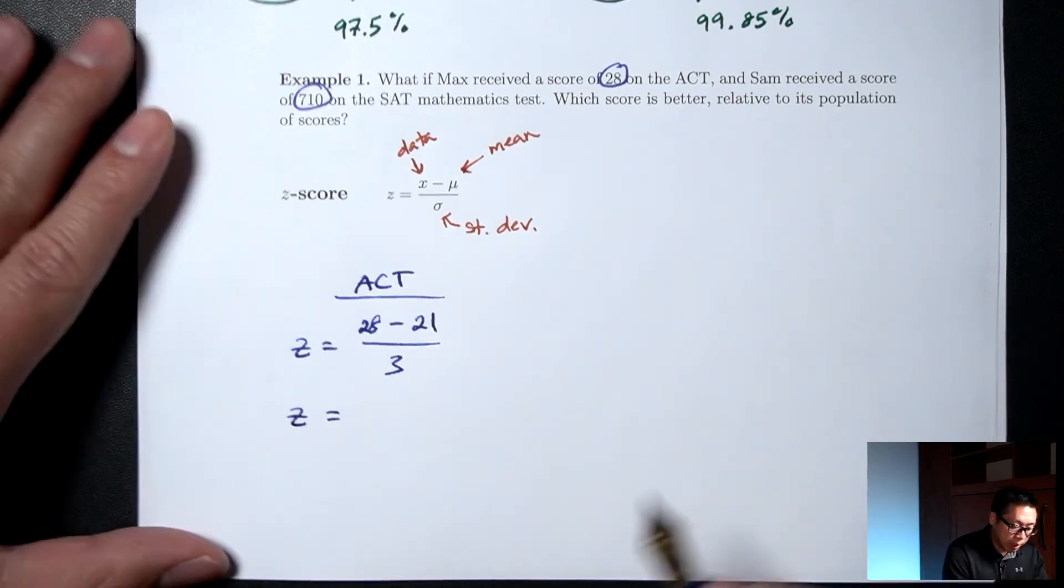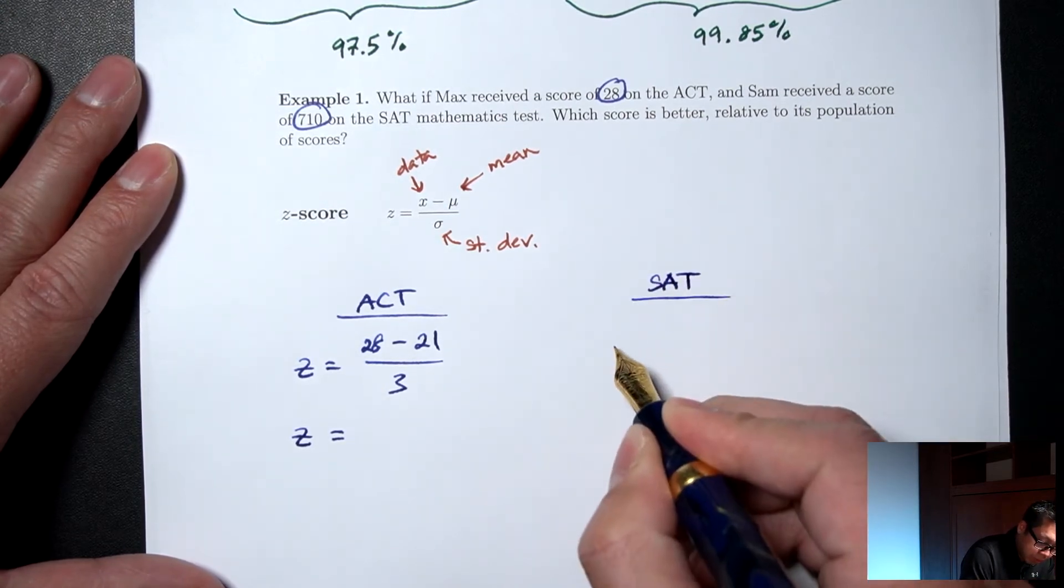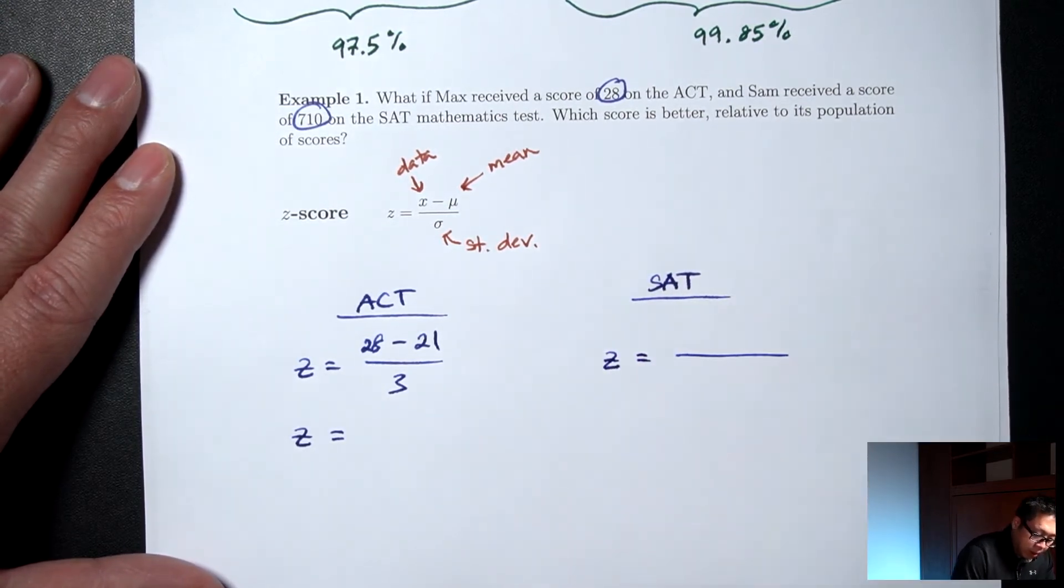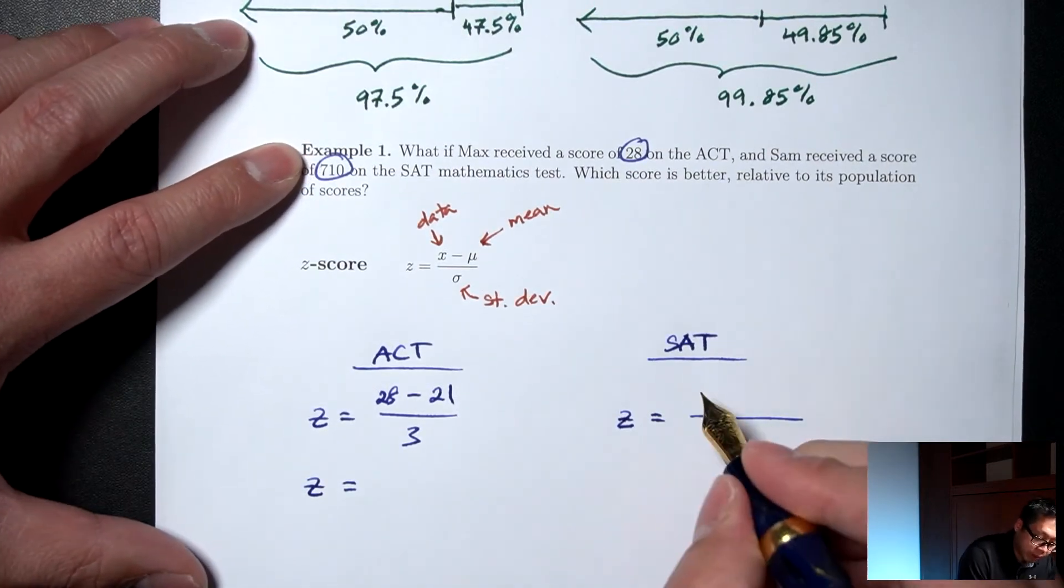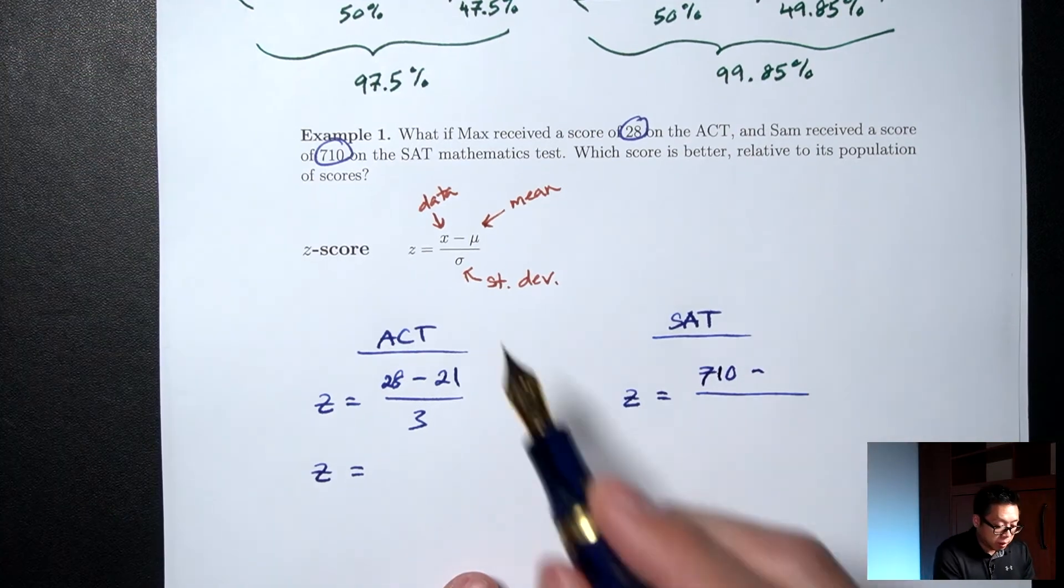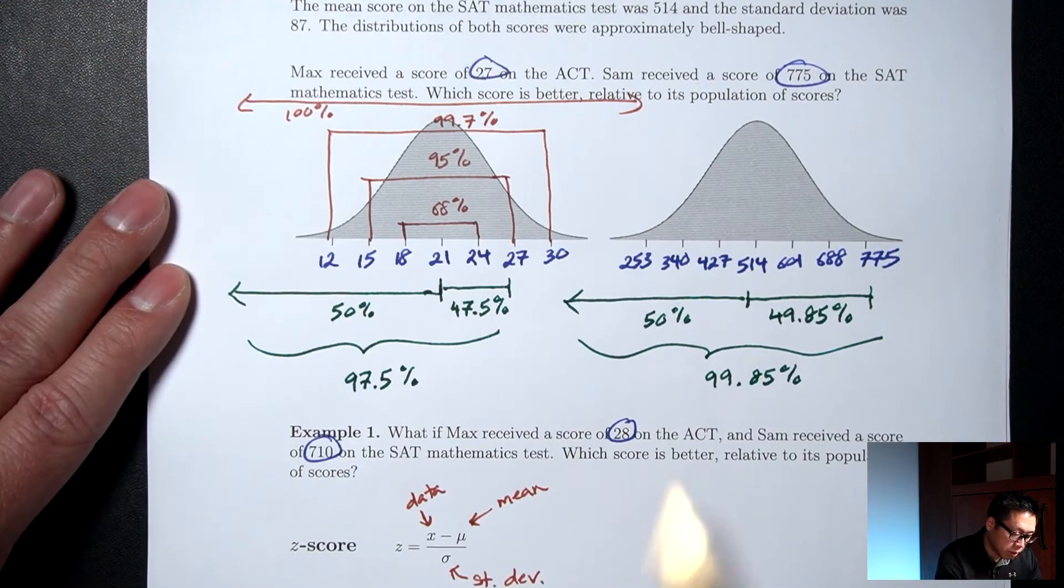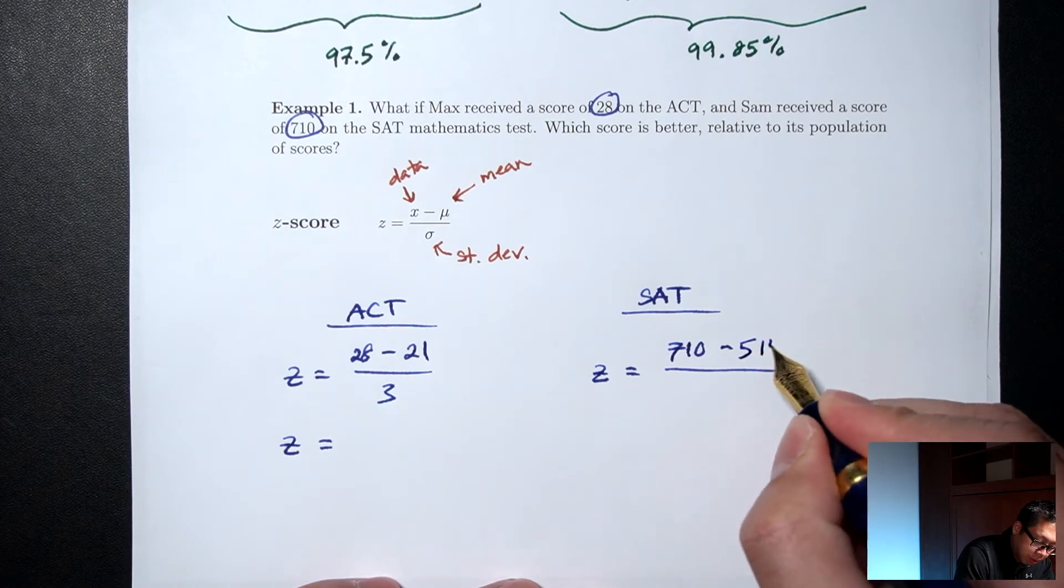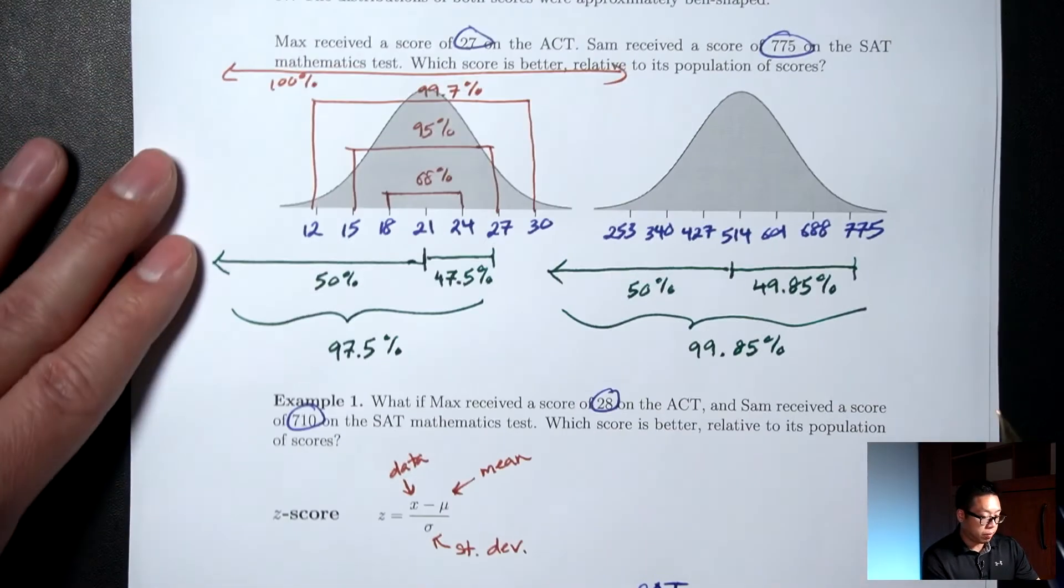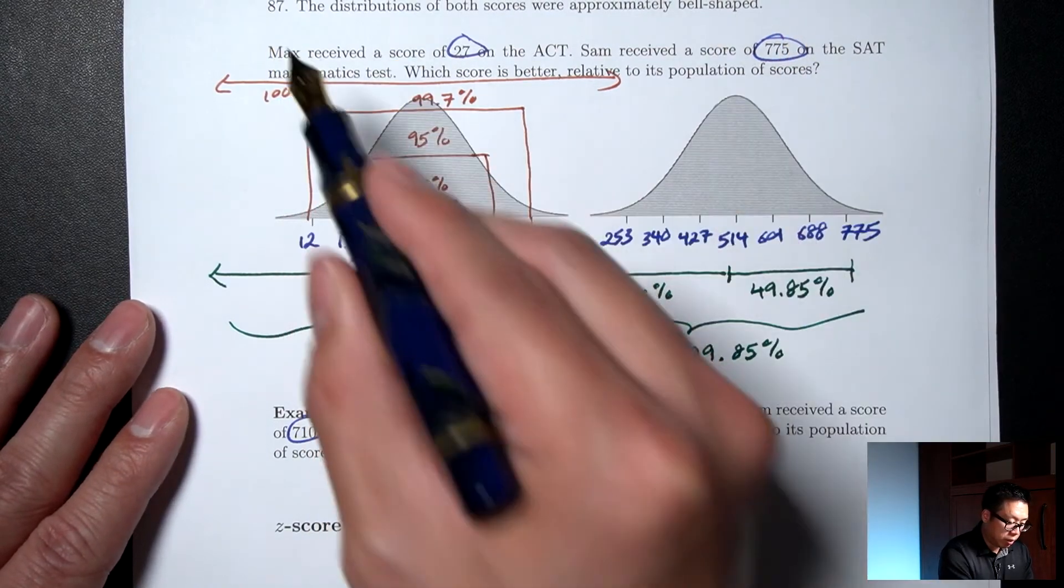I'll need to calculate it there, but let me set up the SAT one first. So for the SAT, our data or our score was 710. Minus the mean for the SAT. The mean for the SAT was 514. And on the bottom, the standard deviation for the SAT math. Standard deviation, 87.